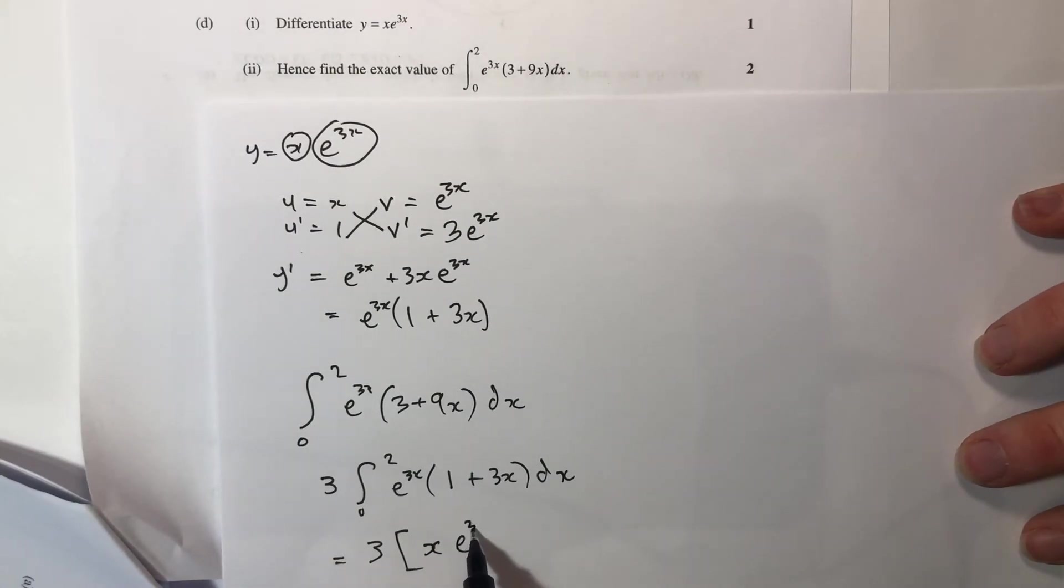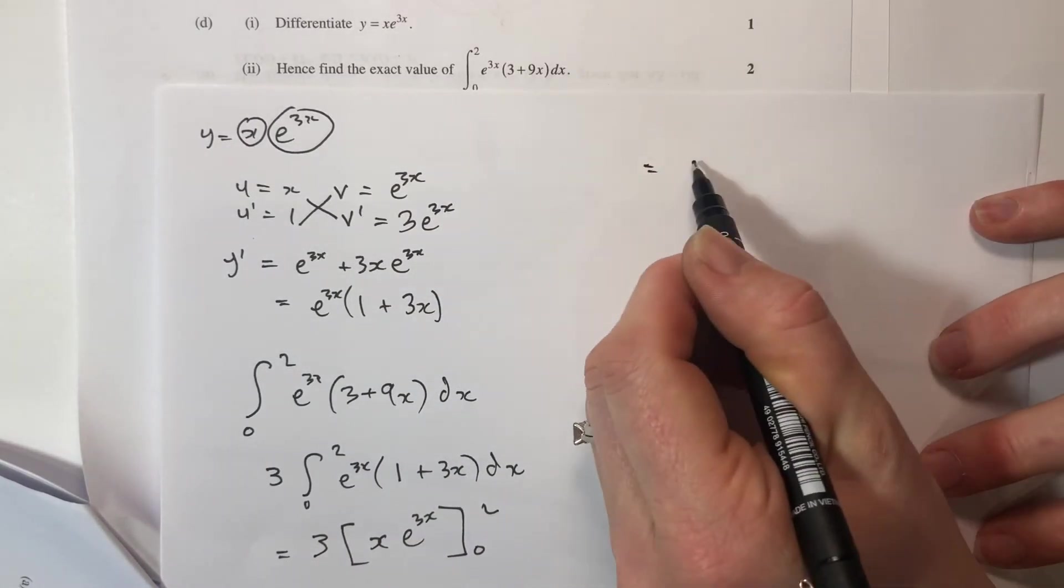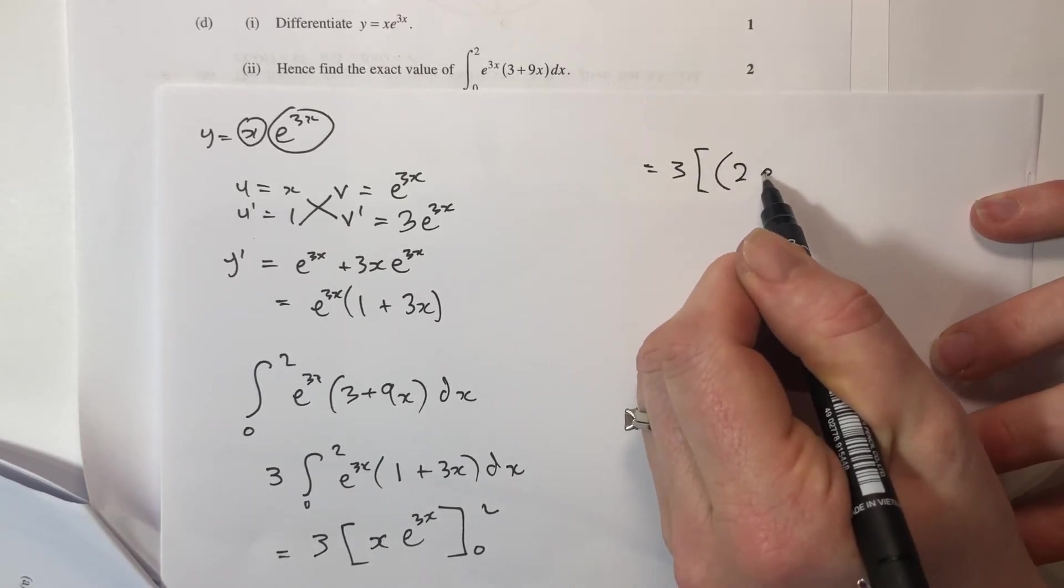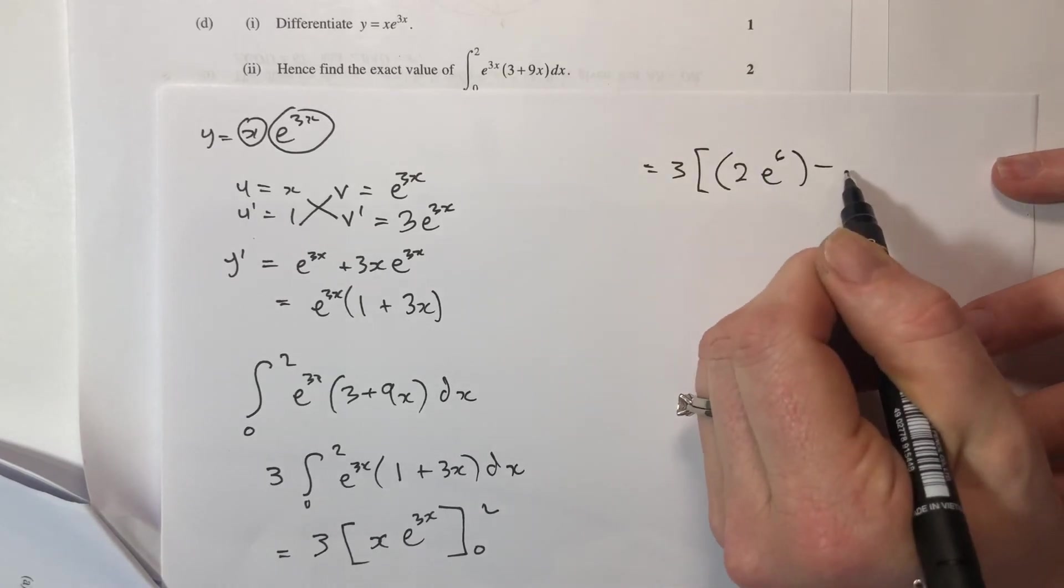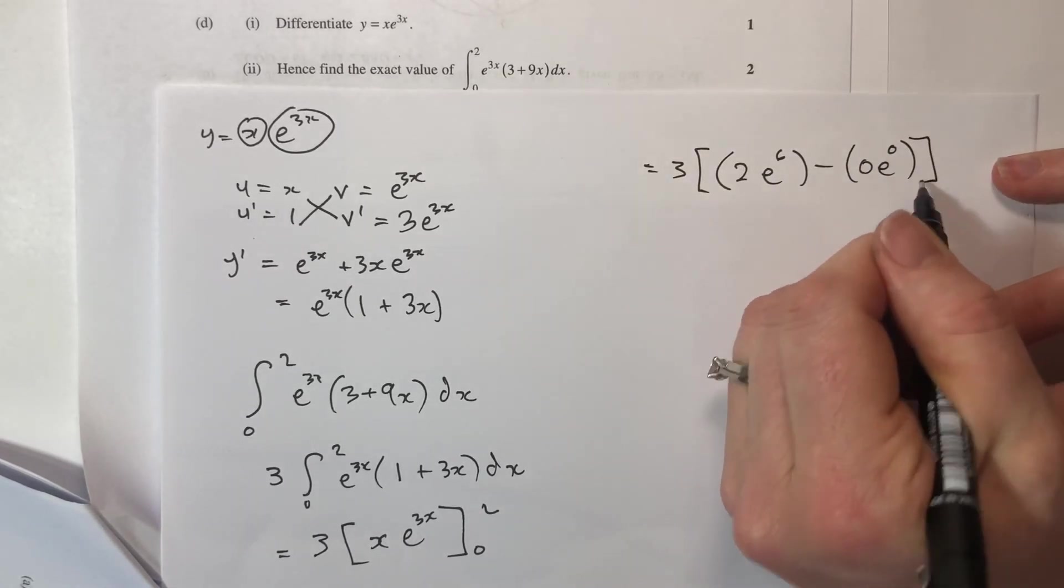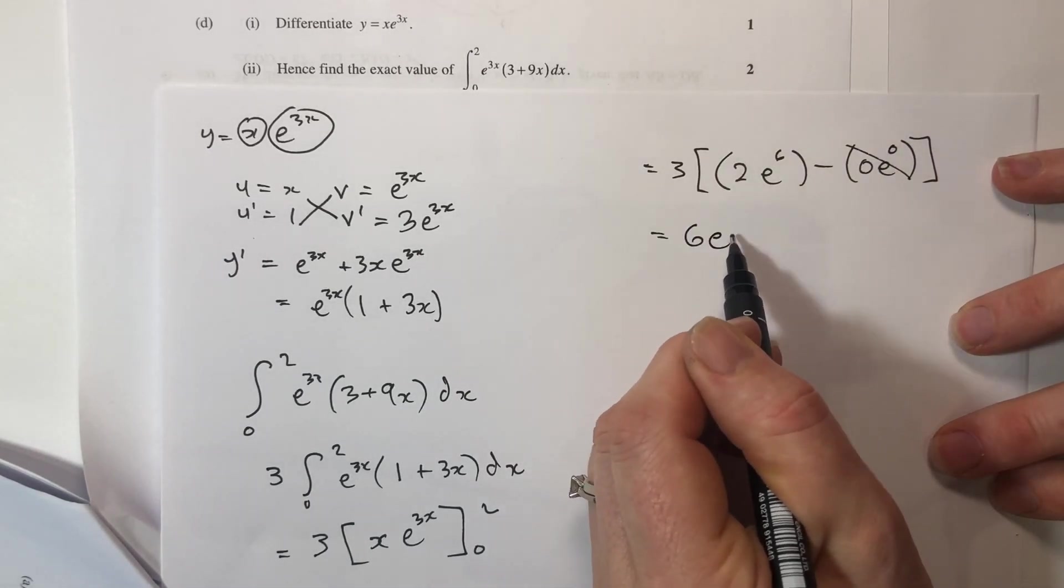Which equals 3 times, put my 0 and 2 in, so 2e to the 6 minus 0e to the 0. e to the 0 is 1 but I've got a 0 at the front so that's just 0. So that's going to be 6e to the 6.